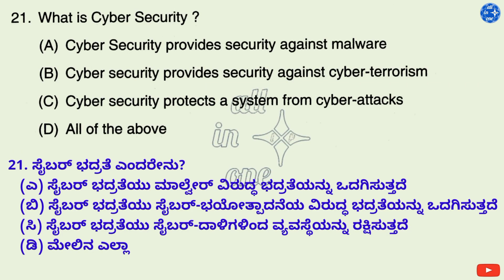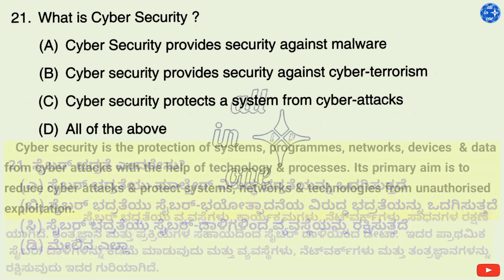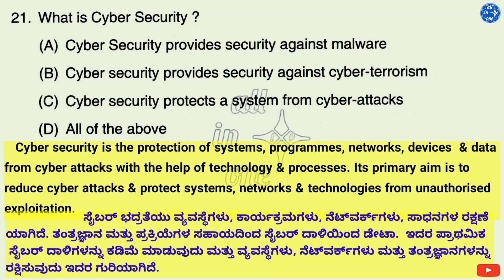Question 21. What is cyber security? Options: A. Cyber security provides security against malware, B. Cyber security provides security against cyber terrorism, C. Cyber security protects a system from cyber attacks, D. All of the above. Cyber security is the protection of systems, programs, networks, devices, and data from cyber attacks with the help of technology and processes. Its primary aim is to reduce cyber attacks and protect systems, networks, and technologies from unauthorized exploitation. Therefore, right option is D: All of the above.